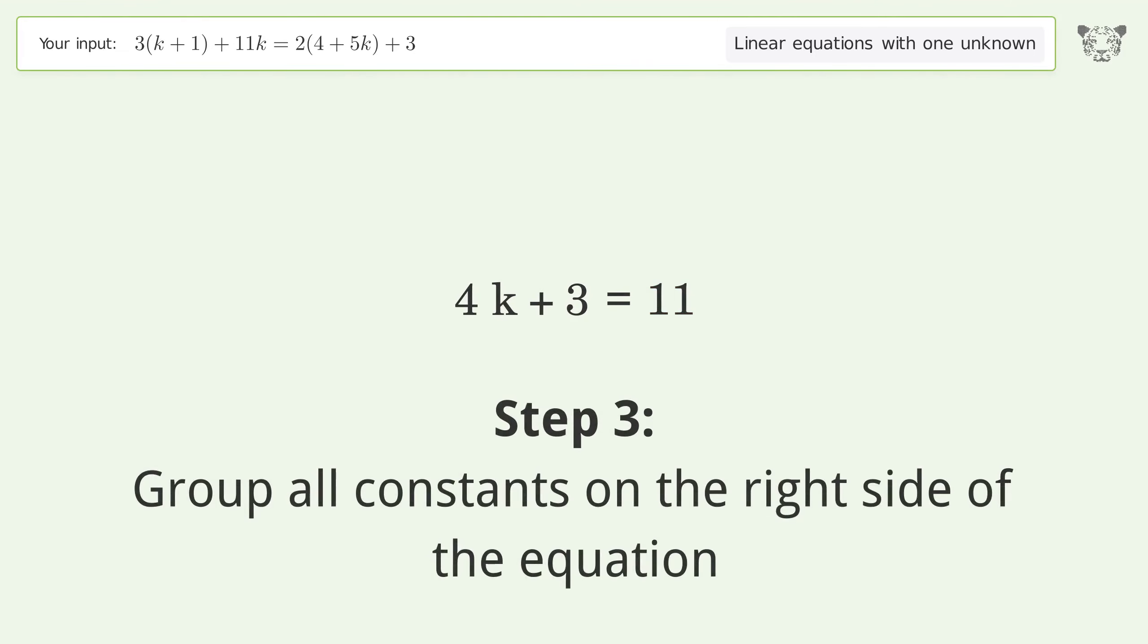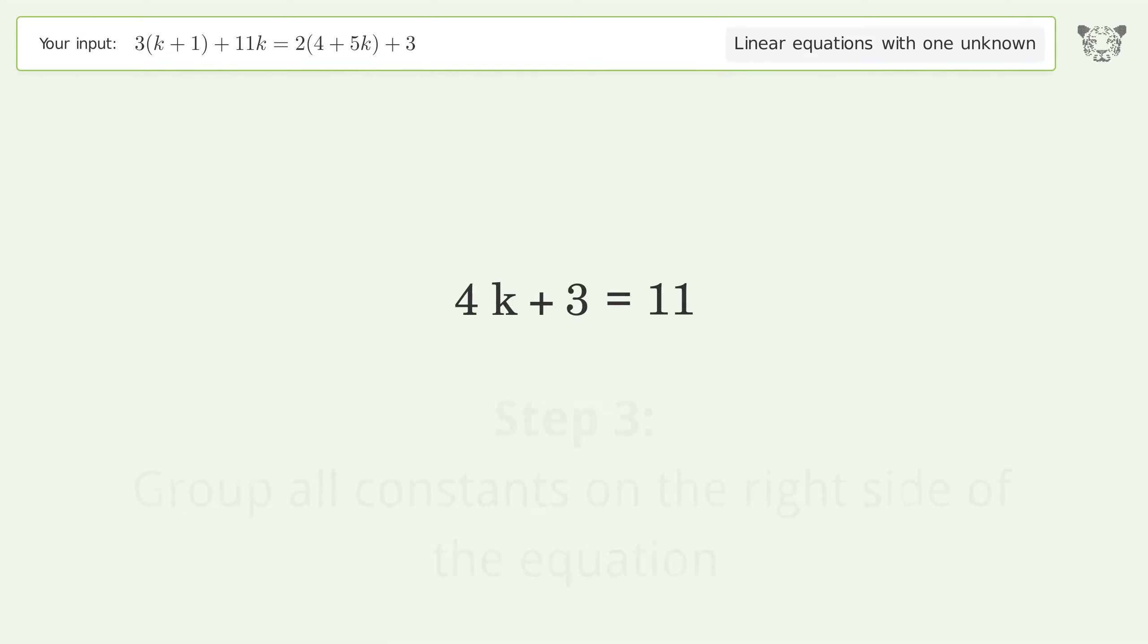Group all constants on the right side of the equation. Subtract 3 from both sides and simplify the arithmetic.